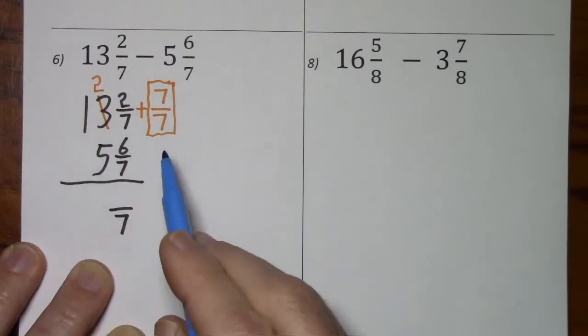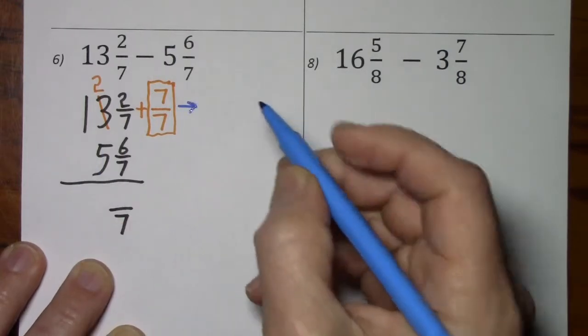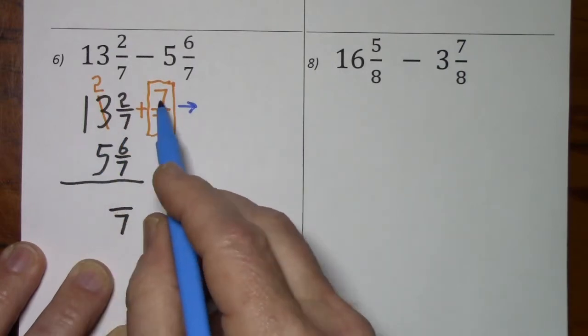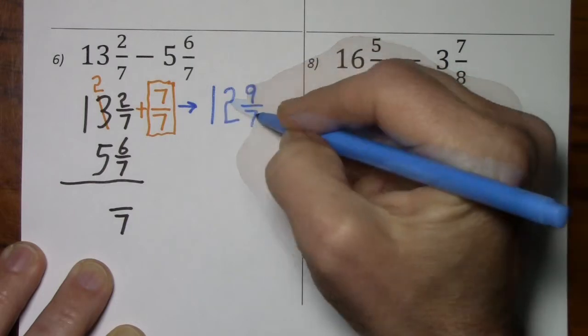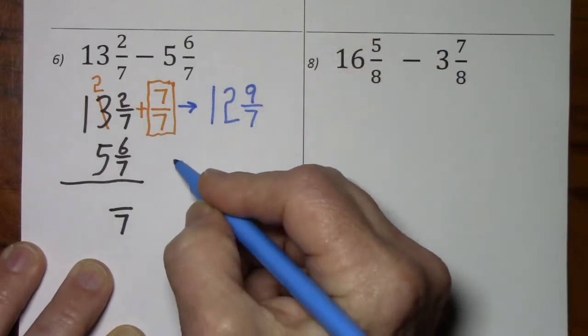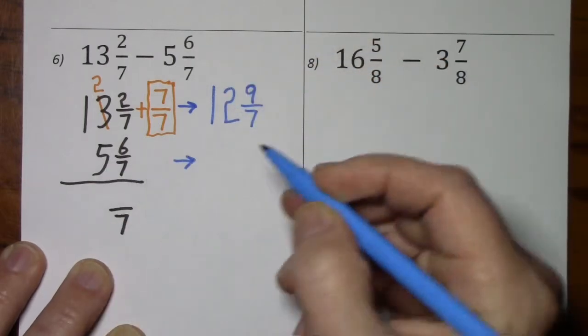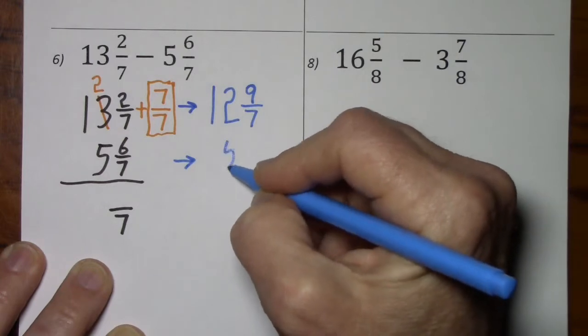This is kind of hard to look at, so I'm going to rewrite it. 12 and 9 sevenths. I'll bring this one over. It's still 5 and 6 sevenths.